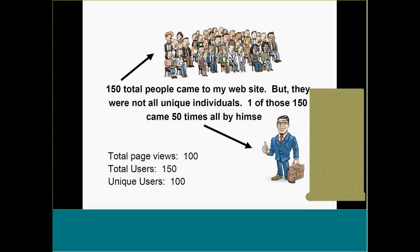Why are those two numbers different and why are they important? A web server records total visits, but that doesn't matter to most advertisers. We want to know uniquely how many individuals are coming to the website. In this example, 150 people came by but one came 50 times — so our unique user count is 100. You don't want to report total user count; advertisers want to know how many unique eyeballs came by.